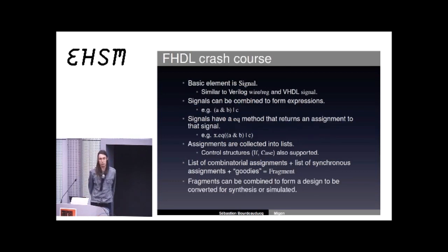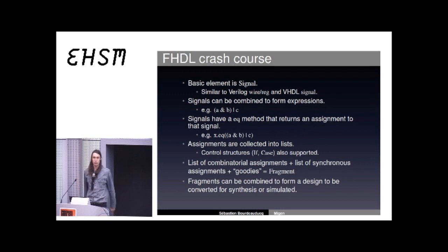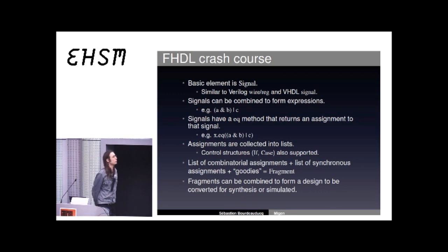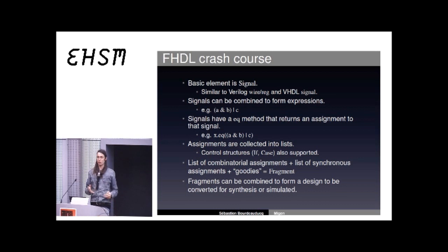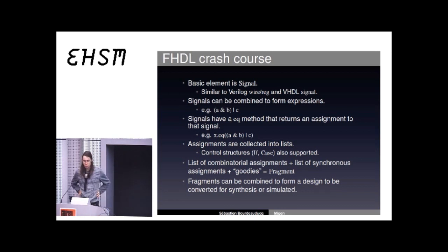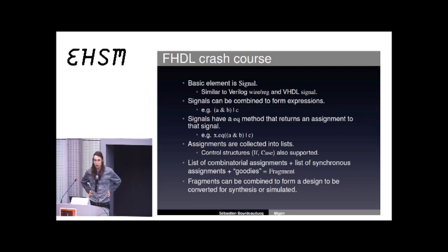The basic element is a signal — that's what you have in Verilog declared with wire or reg, or signal in VHDL — and it's roughly equivalent to an electric wire inside a chip. You can combine signals to form expressions, just normal boolean expressions. When you write an expression, all the Python operators have been overloaded correctly so that it generates nested Python objects representing that expression. When you want to assign it to another signal, you use the .eq() method of that signal, passing the expression as a parameter, and that returns an assignment object linking the signal to its value.